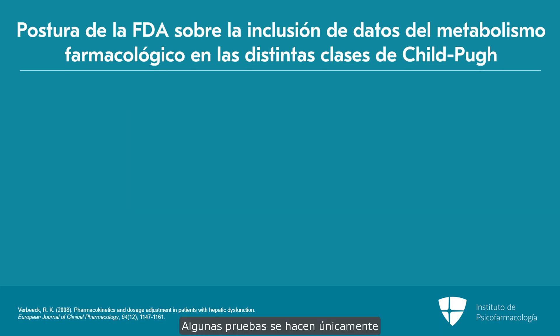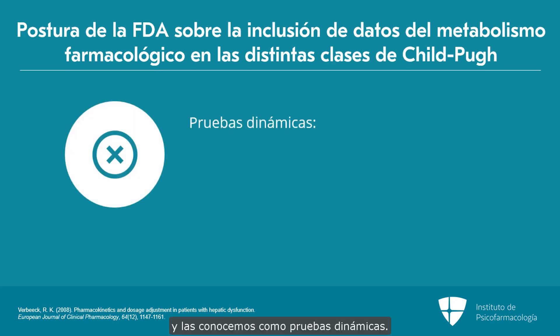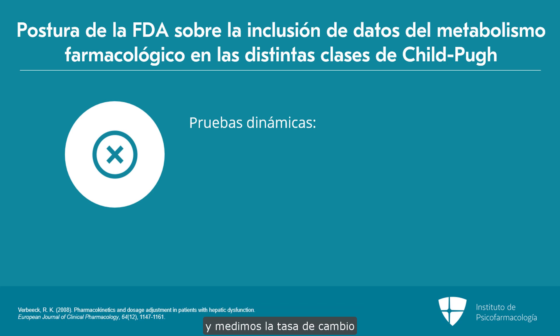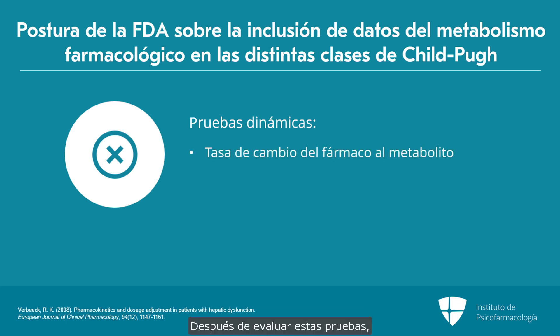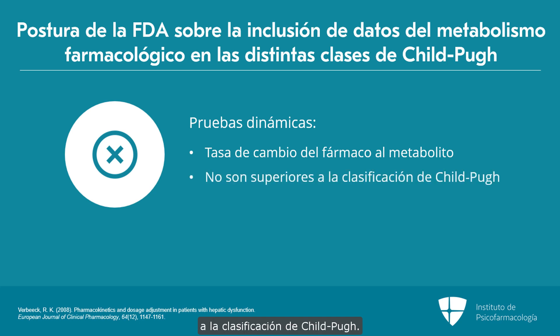There are things done for research purposes only — what we call dynamic tests — where we would inject people with drugs and look at the ratio of the drug to metabolite. But the FDA said they've looked at those and they're actually not superior to the Child-Pugh classification.